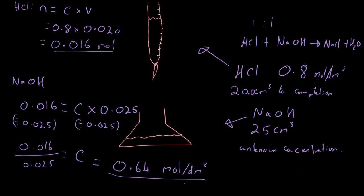The titration should be carried out at least three times. You then take an average of your results after discarding any anomalous ones — those that are very different from the rest. Use three values that are close to each other and average those.